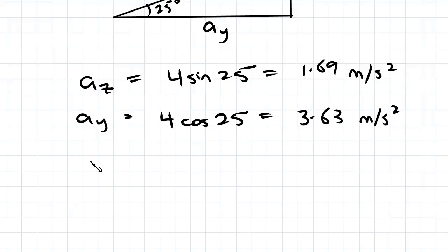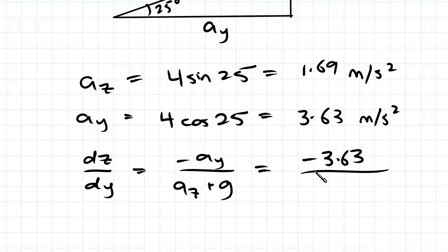We know that dz on dy equals negative ay on az plus g. We just found those. So we'll have negative 3.63 on the top. az is 1.69 plus 9.81. And that reduces down to negative 0.32.